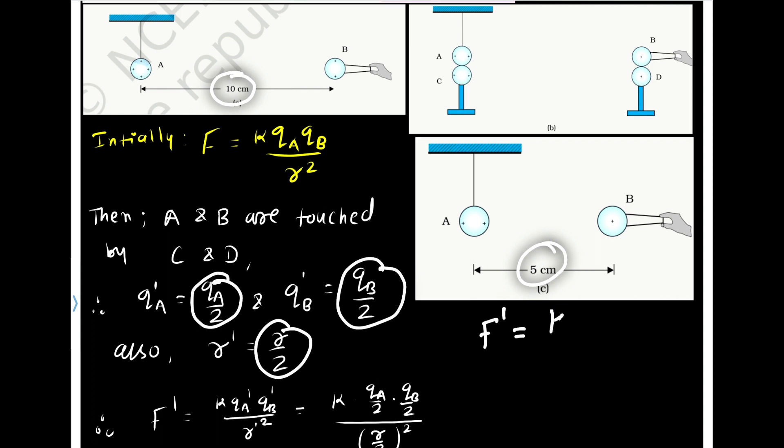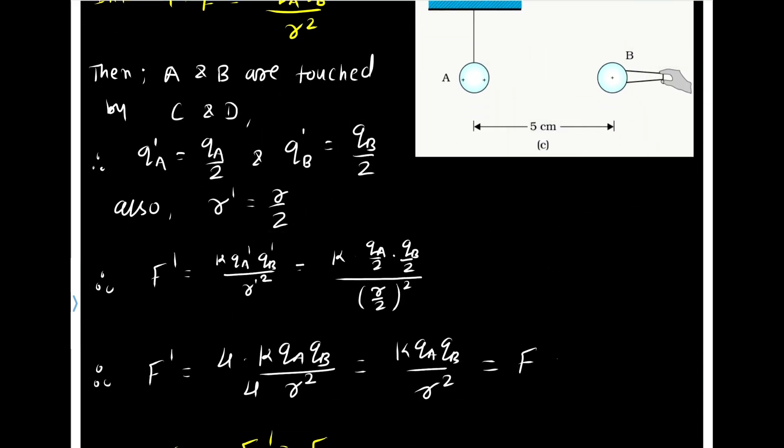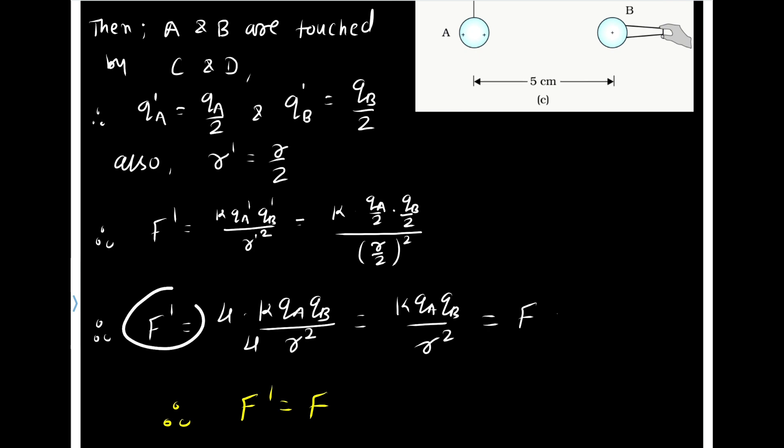The new force between them is K QA by 2 times QB by 2 divided by R by 2 square. On solving this, we get 2 times 2 equals 4 in the numerator, and 2 square equals 4 in the denominator. The 4s cancel out, so the new force F dash equals F.